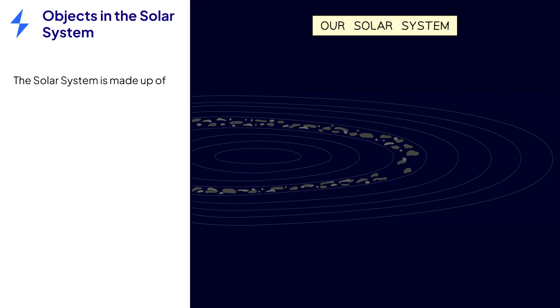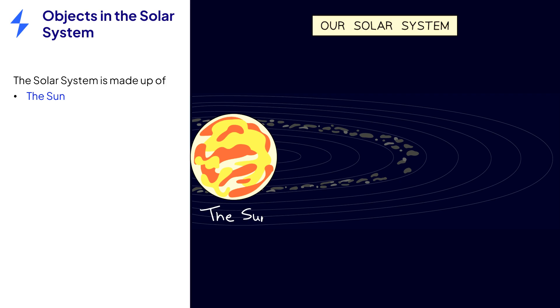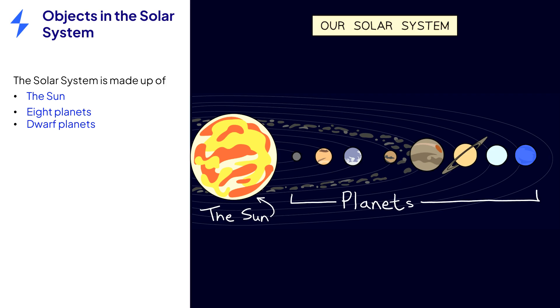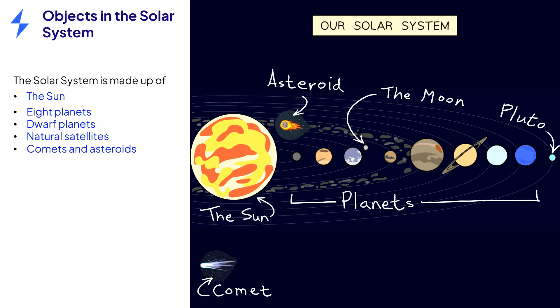Within the solar system, there is the sun at the centre, followed by the eight planets and the dwarf planets such as Pluto. These objects all orbit around the sun. Natural satellites, such as the moon, orbit around planets. Finally, there are comets and asteroids which also orbit around the sun.